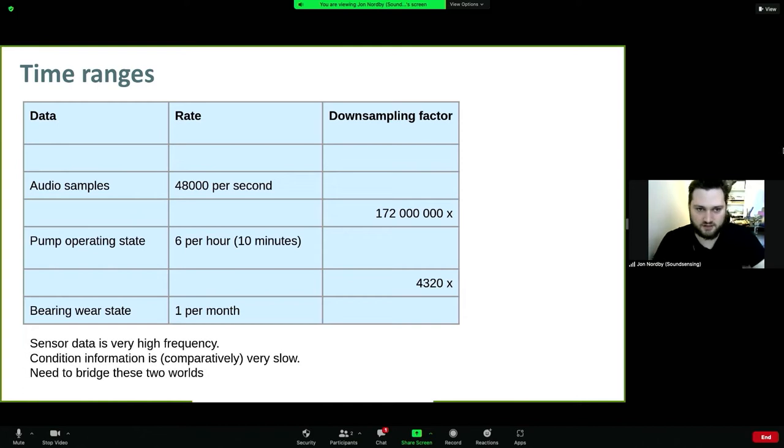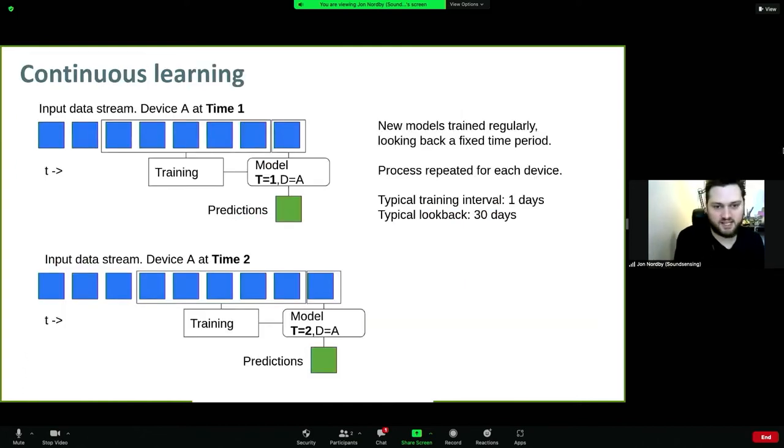Also important to understand in this anomaly detection world is that the models are not static because the world is not static. Your office over a day has different patterns - for example, ventilation systems are typically off during the night. It might have demand control ventilation, which means during the day as people come and go the ventilation system runs at different speeds to maintain quality at the lowest possible energy cost.